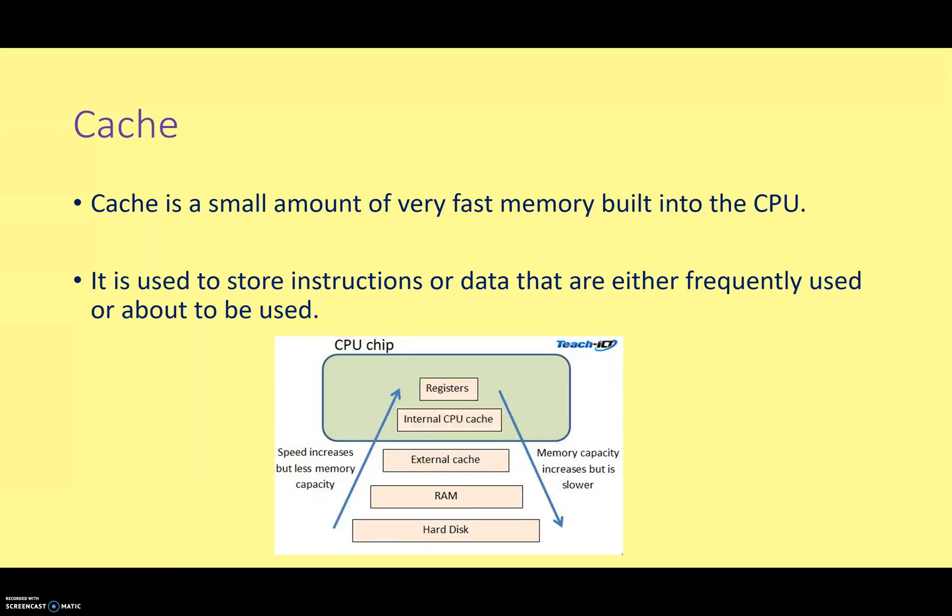Now, what do we do with cache? Well, we use it to store instructions or data that are either frequently used or that are going to be used by the CPU in the next few fractions of a second.